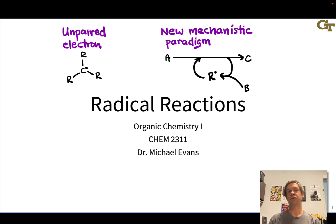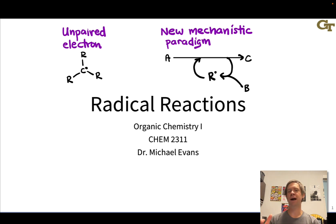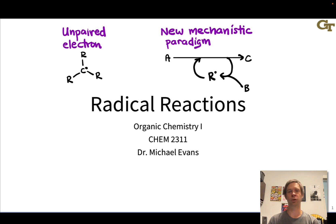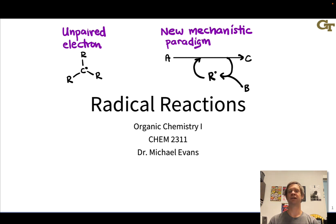The mechanisms of radical reactions quite frequently are not linear, but they're also not exactly catalytic. They follow what's called a chain pattern, where new radicals are constantly regenerated from the starting materials through a chain type of mechanism. We'll see the interesting things we can do with radicals, both with alkanes and with unsaturated functionality like alkenes and alkynes, and look at these new mechanisms.